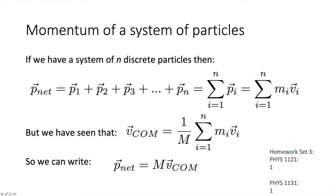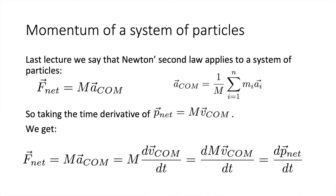From last lecture, Newton's second law applies to a system of particles: the net force equals mass times the acceleration of the centre of mass, where the acceleration of the centre of mass equals 1 over the total mass times the sum of each particle's mass times its acceleration.